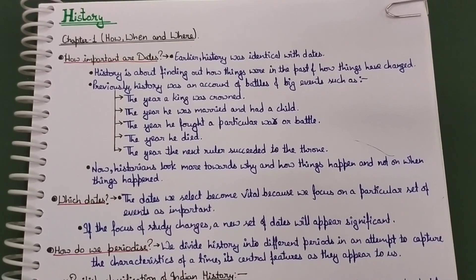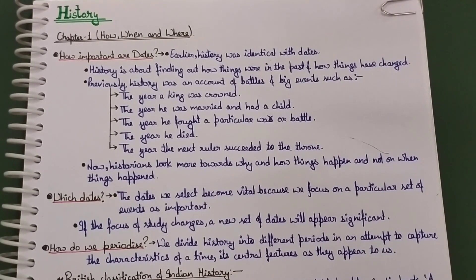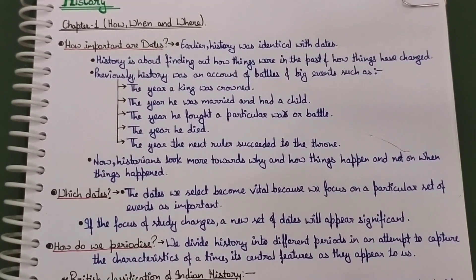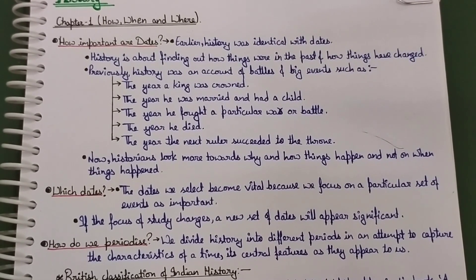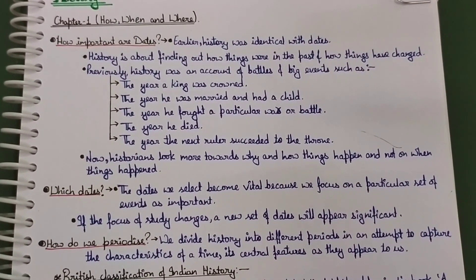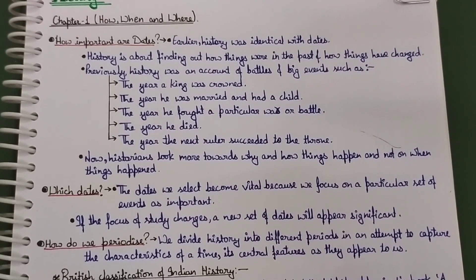Previously, history was an account of battles and big events — such as the year a king was crowned, the year he was married and had a child, the year he fought a particular war or battle, the year he died, and the year the next ruler succeeded to his throne. Now, however, historians look more towards why and how things happen, not just when things happen. Historians focus more on the reasons behind events.